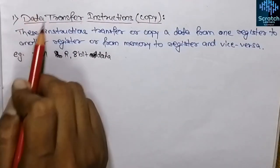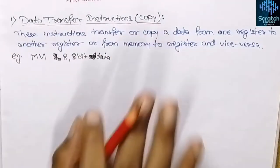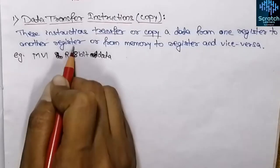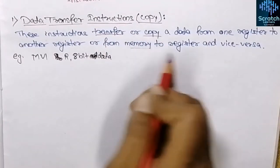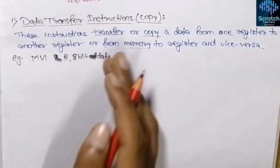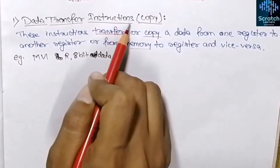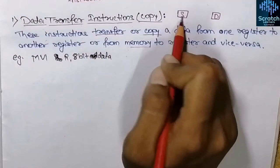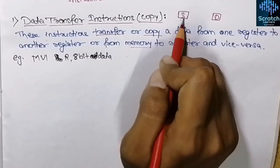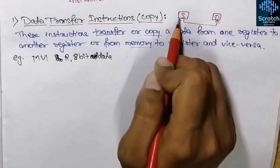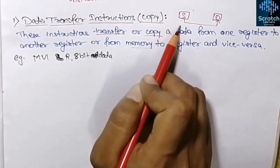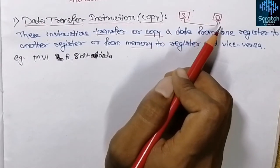The first category is data transfer instructions. As the name suggests, some data is going to be transferred from one place to another. These instructions transfer or copy data from one register to another register, or from memory to a register and vice versa. The data transfer takes place between source and destination without modifying the content of the source.